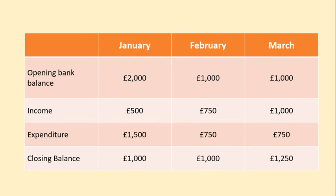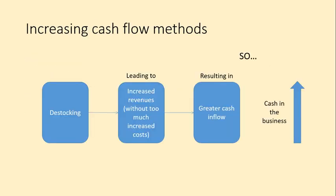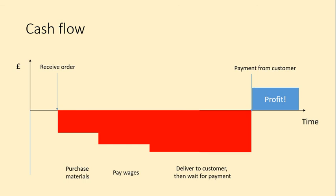In March the closing balance is £1,250. We can assume that in January they took action to decrease expenditure and increase income — perhaps laying off a member of staff, engaging in destocking, or changing their price point. As a result, they're no longer running down their bank balance and are actually starting to increase it, so they'll be able to keep the business going for many more months with an improving cash flow position.